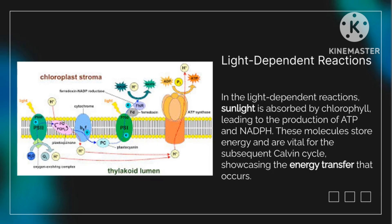Light-dependent reactions. In the light-dependent reactions, sunlight is absorbed by chlorophyll, leading to the production of ATP and NADPH. These molecules store energy and are vital for the subsequent Calvin cycle.